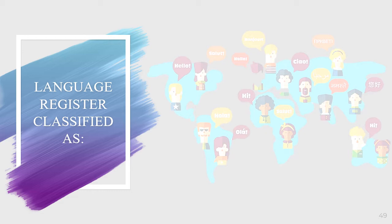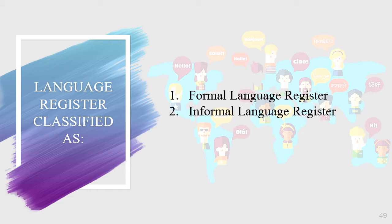Language register is classified as: first, formal language register — more appropriate for professional writing and letters to a boss or a stranger, for example business letters, announcements, and professional emails. Second, informal language register — conversational and appropriate when writing to friends and people you know well, for example personal emails, phone texts, and short notes. Third, neutral language register — not necessarily formal or informal, used to deliver facts, for example reviews, articles, and some letters.